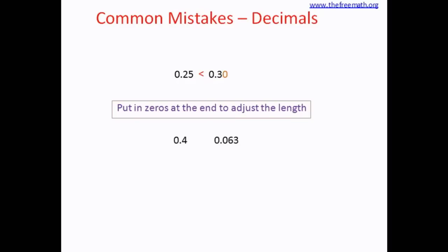Here is another example, 0.4 and 0.063. Again, instantly it feels like 4 is smaller than 63. But what you can do is write extra zeros after 0.4. So it looks like this, 0.400 and 0.063. And now you know that 0.063 is smaller than 0.4.